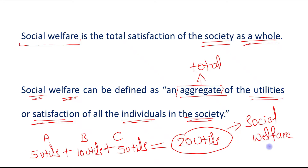These 20 utils represent social welfare, while the individual figures — Individual A, Individual B, and Individual C — represent individual welfare, because each shows the welfare of a particular individual. These three are individual welfare.